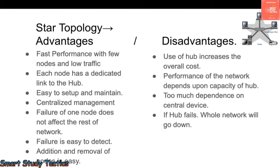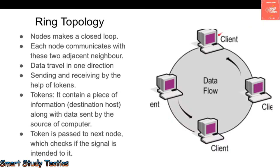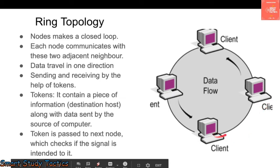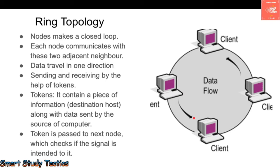Next is ring topology. As you can see, it forms a ring. Data flows from one computer to another in one direction only — keep that in mind. Data travels in the form of tokens. A token contains a piece of information: the destination host and data signed by the source computer. So if one computer generates a token, that token travels around the ring to reach the intended destination.